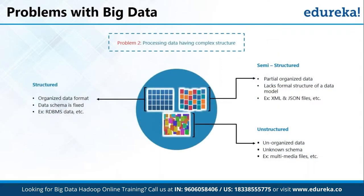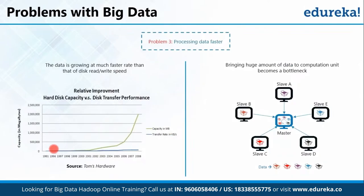Since data is not only huge but present in various formats — unstructured, semi-structured, and structured — you need a system that can store this variety of data from various sources. Looking at the diagram: hard disk capacity is increasing, but disk transfer performance or speed is not increasing at that rate. With only 100 MBps I/O channel processing 1 TB of data, it will take somewhere around 2.91 hours. What if you're processing zettabytes of data? With 4 I/O channels for the same amount of data, it takes approximately 0.72 hours — around 43 minutes. For huge data, accessing and processing speed is a bigger problem than storage.